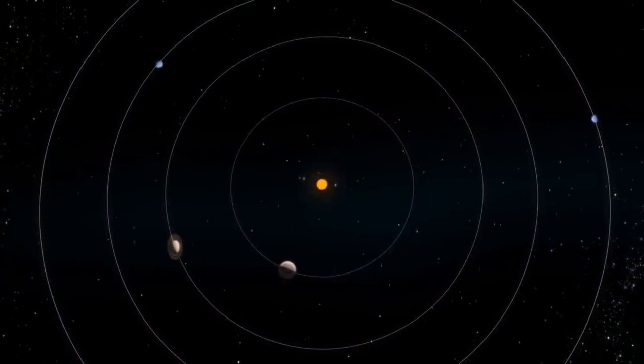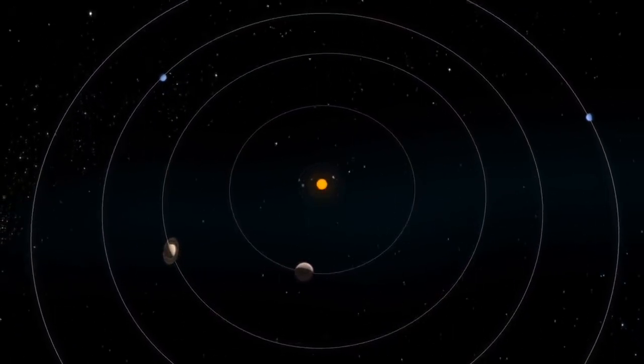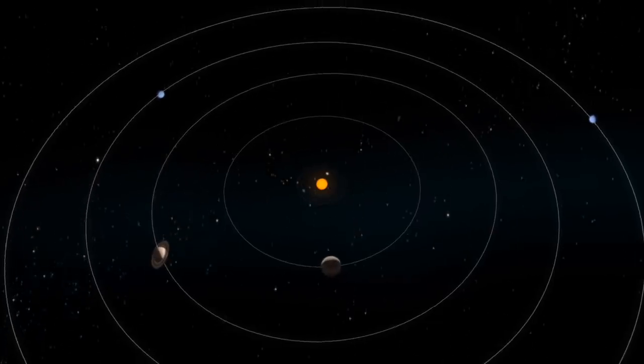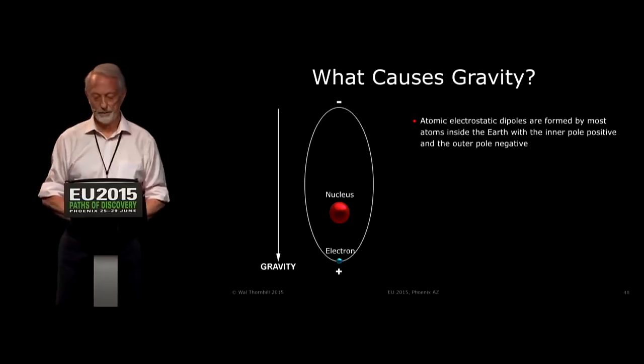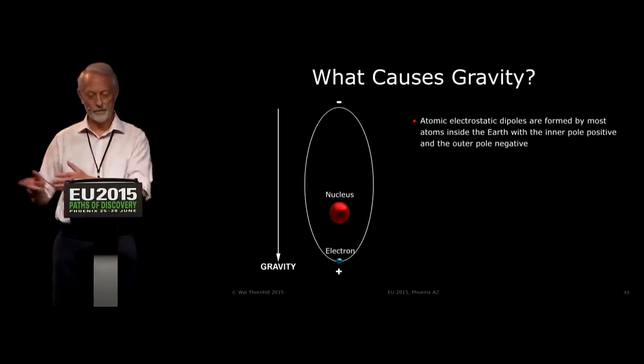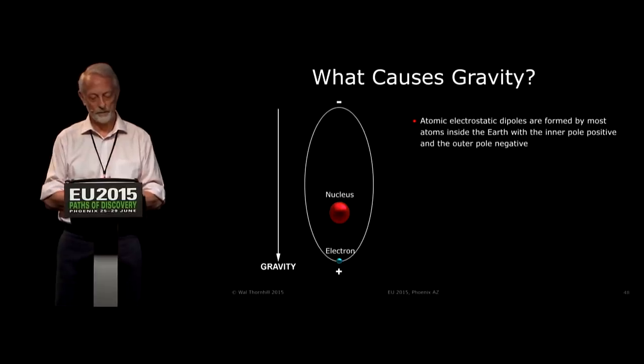However, this is not to say that the Electric Universe denies gravity's existence. For more than 40 years, the leading proponent of the Electric Universe, physicist Wal Thornhill, has worked on an explanation for gravity that actually links gravity and electromagnetism.